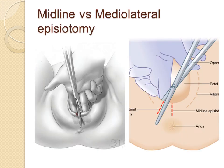Let's do a quick review of a midline and a mediolateral episiotomy. The picture on your left is a midline episiotomy where the incision is made at the 6 o'clock position of the perineum. The picture on the right is a right mediolateral episiotomy where the incision is placed at the 7 o'clock position. We can also do a left mediolateral episiotomy by placing the incision at the 5 o'clock position. Doing a left or right mediolateral episiotomy will depend on the handedness of the surgeon.